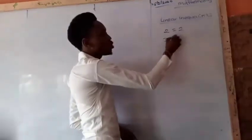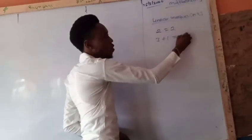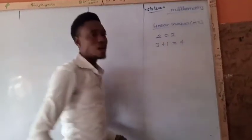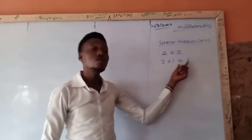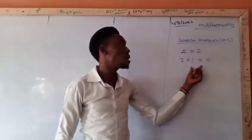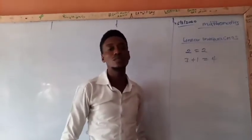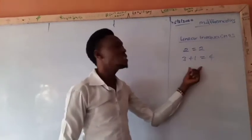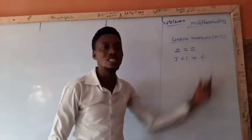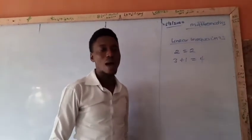It's like when I give you 3 plus 1, it equals 4. You will agree with that — 3 plus 1 is the same thing as 4. These are equalities. They are equal.